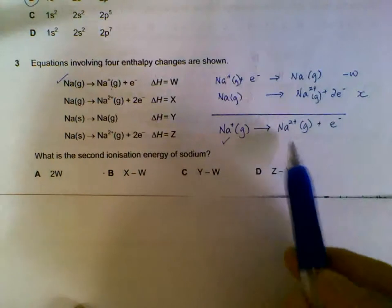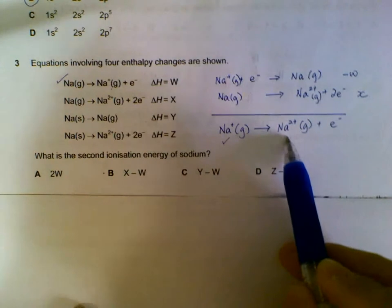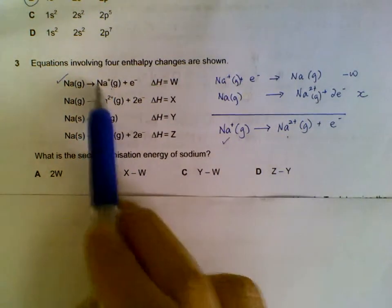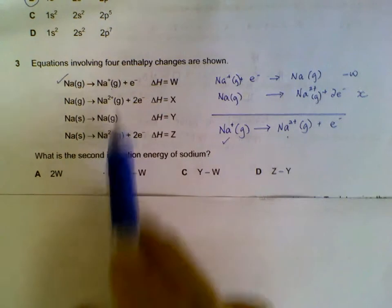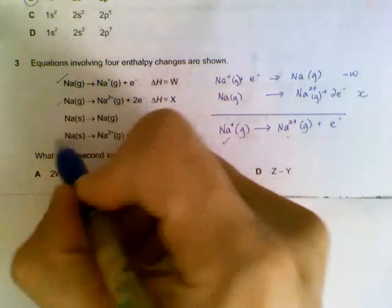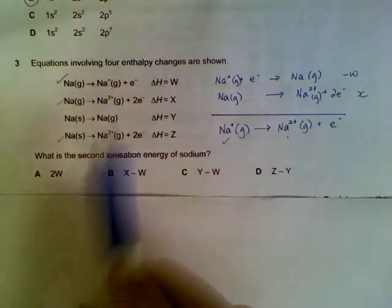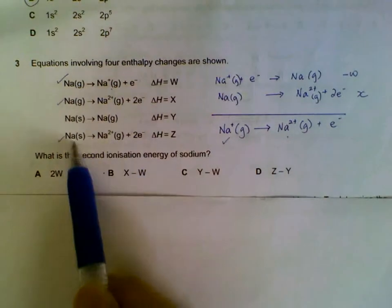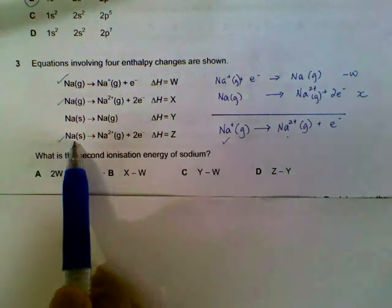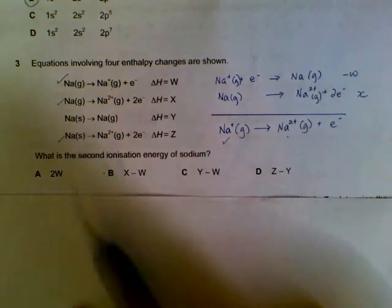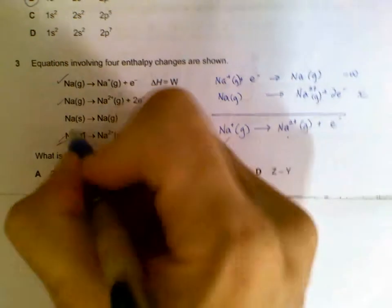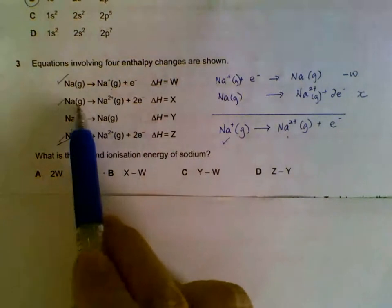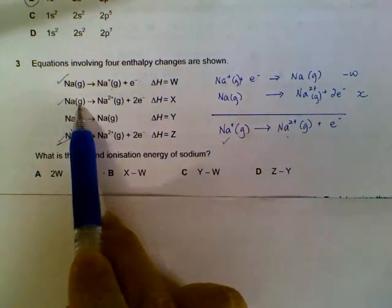That's our first equation, and that settles the Na+ gas on this side. Then we see that we need Na2+ gas on the right side. Looking down the row, we have Na2+ gas here and here. However, this Na2+ gas is paired with Na solid, which is not what we want. So this is out. This Na is actually in gaseous form, so that's what we want.